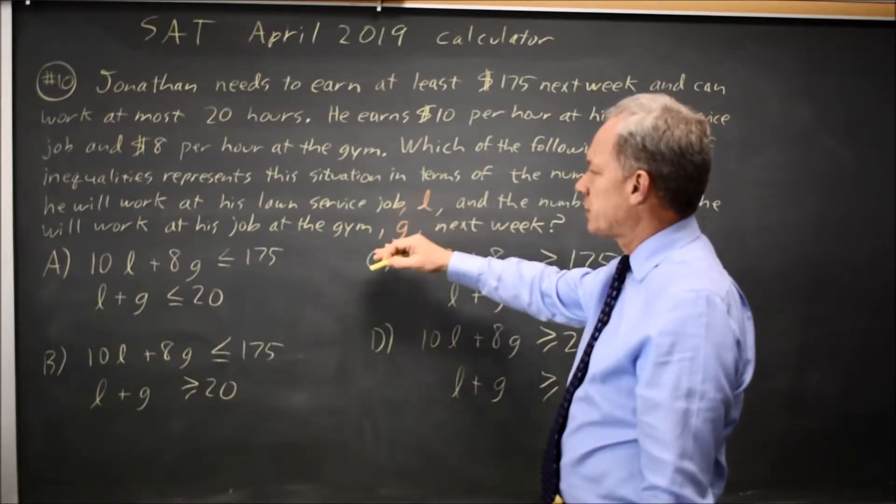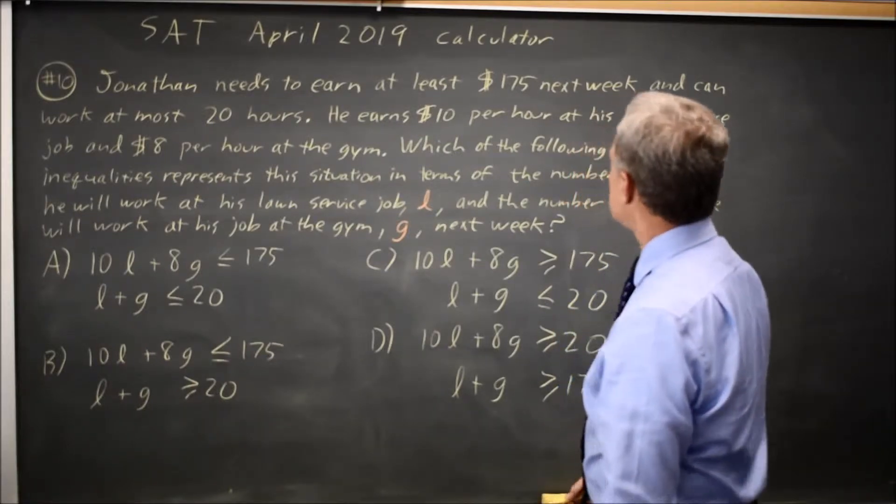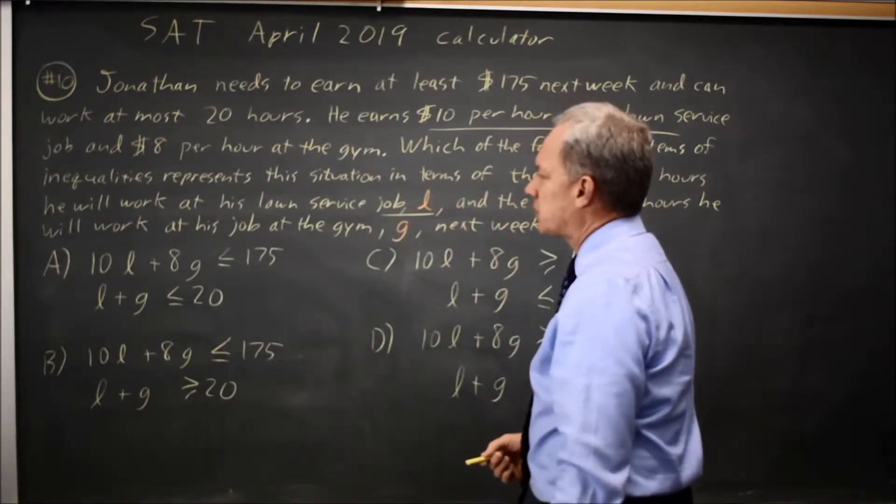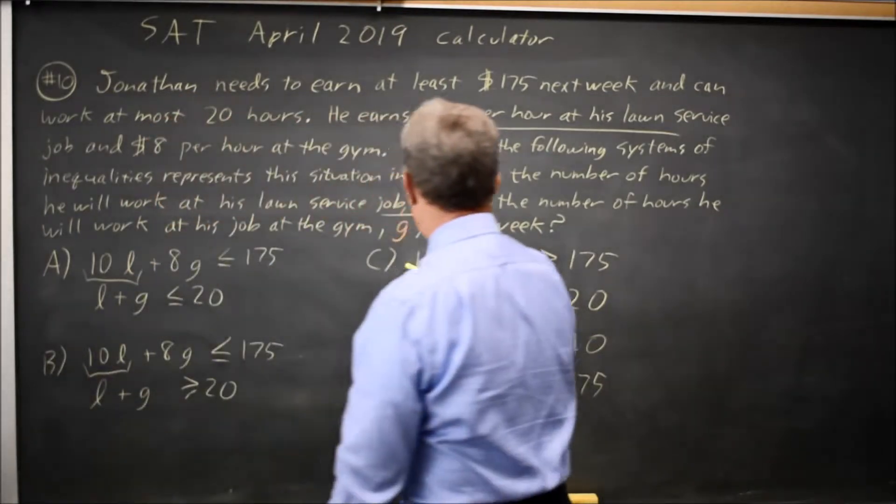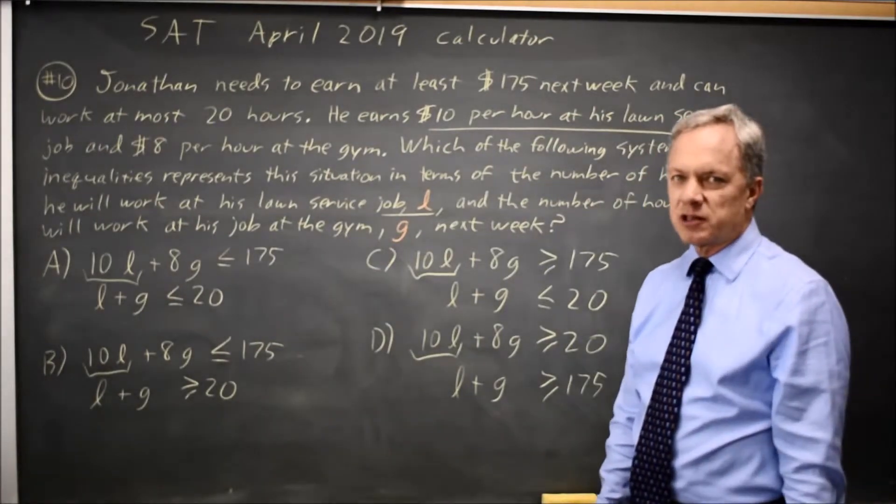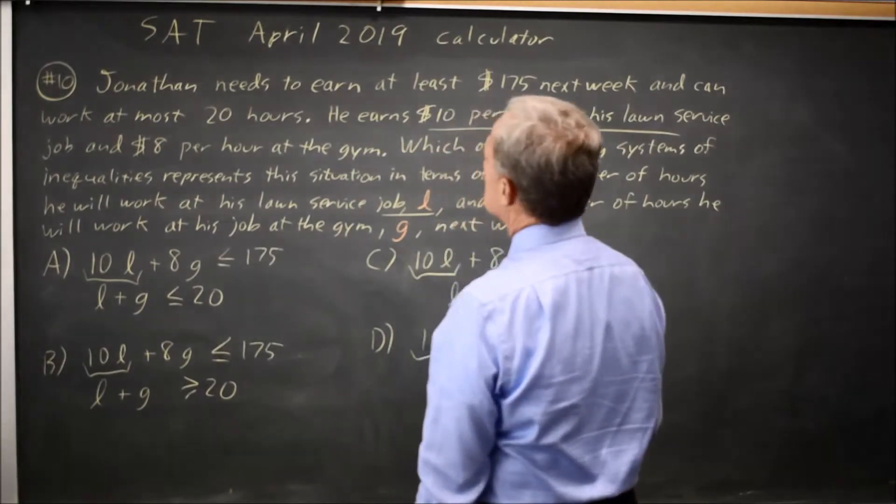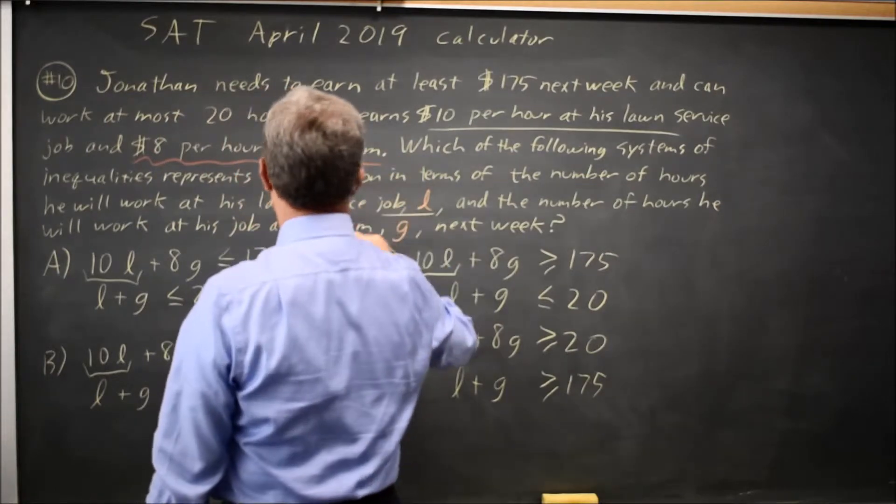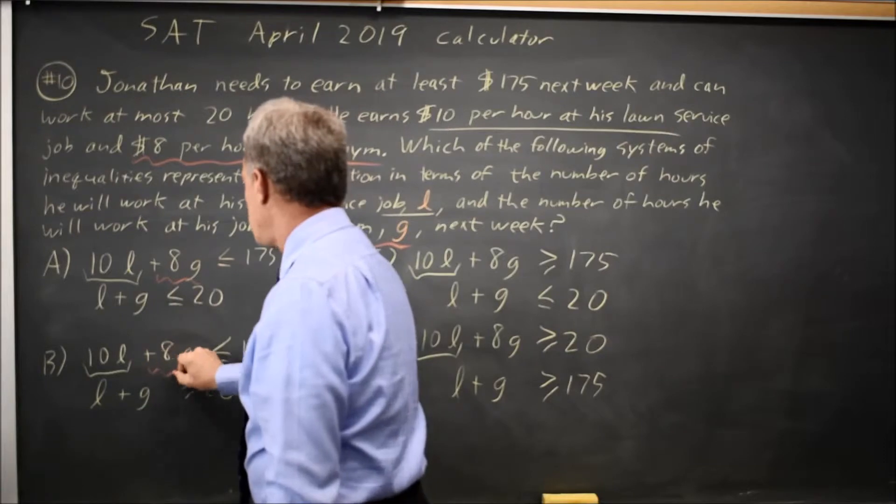He makes $10 per hour at lawn service and $8 per hour at the gym. L is his hours of lawn service and G is his hours at his job at the gym. So if it's $10 per hour for lawn service and that's L hours, that would be 10L, which is the expression we see in all four questions. They're not swapping the L coefficient with the G coefficient, which they will sometimes do. If he earns $8 per hour at the gym, and gym is G, that would be 8G, which we also see.